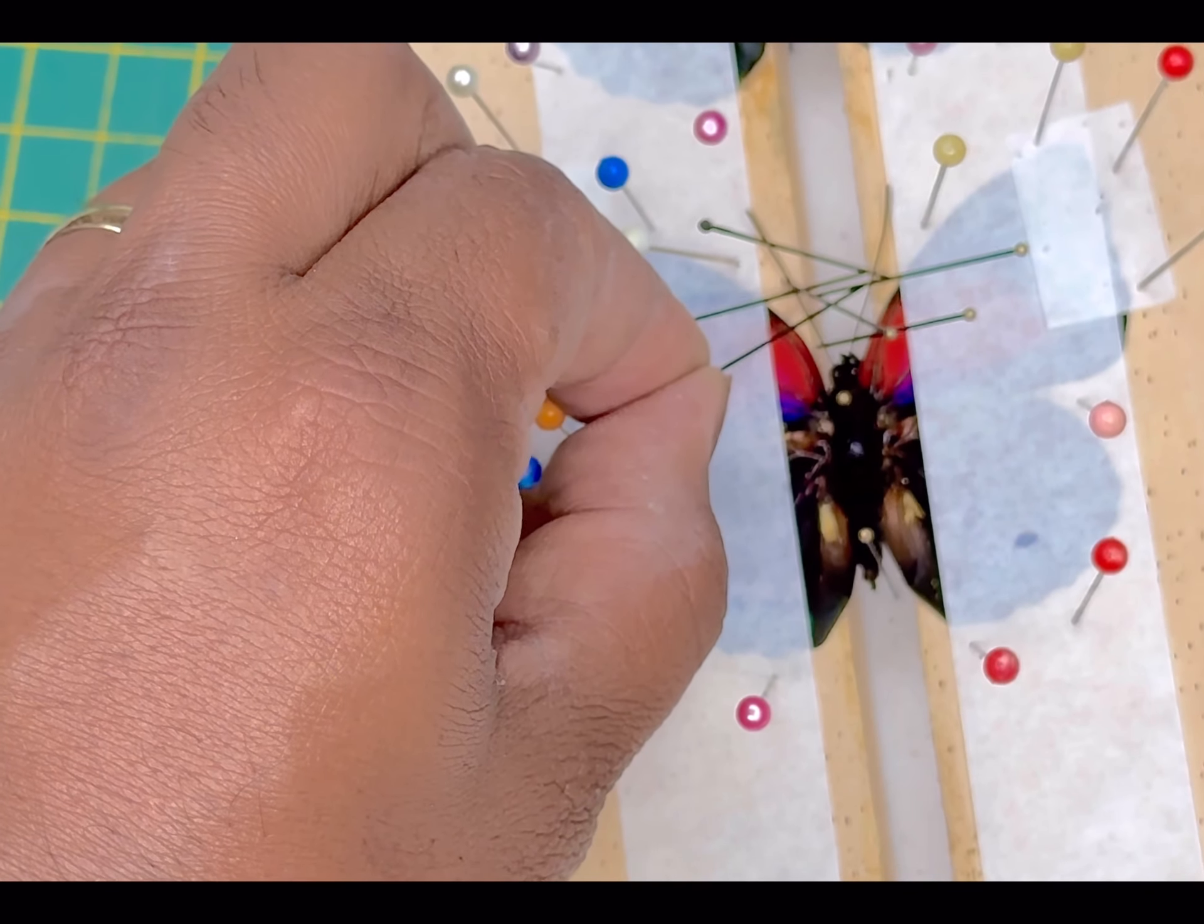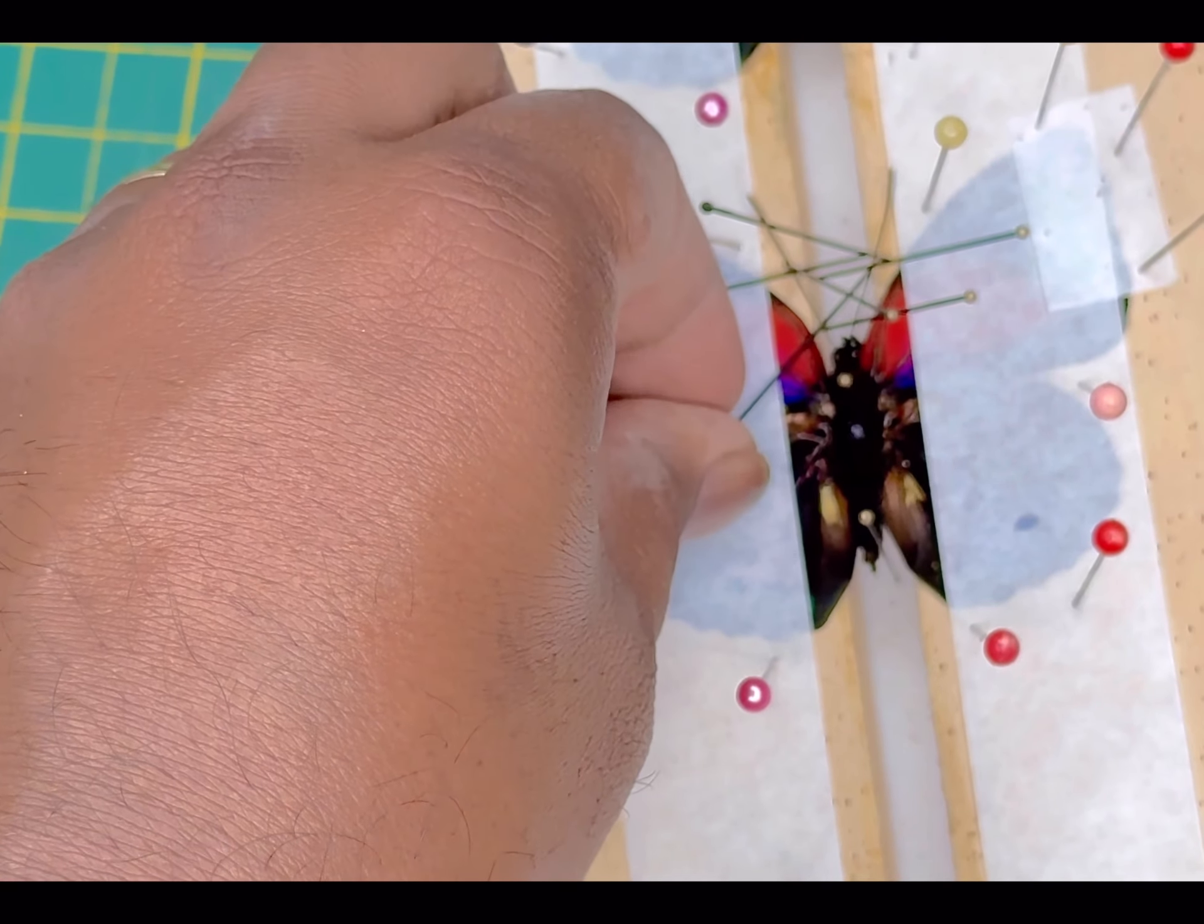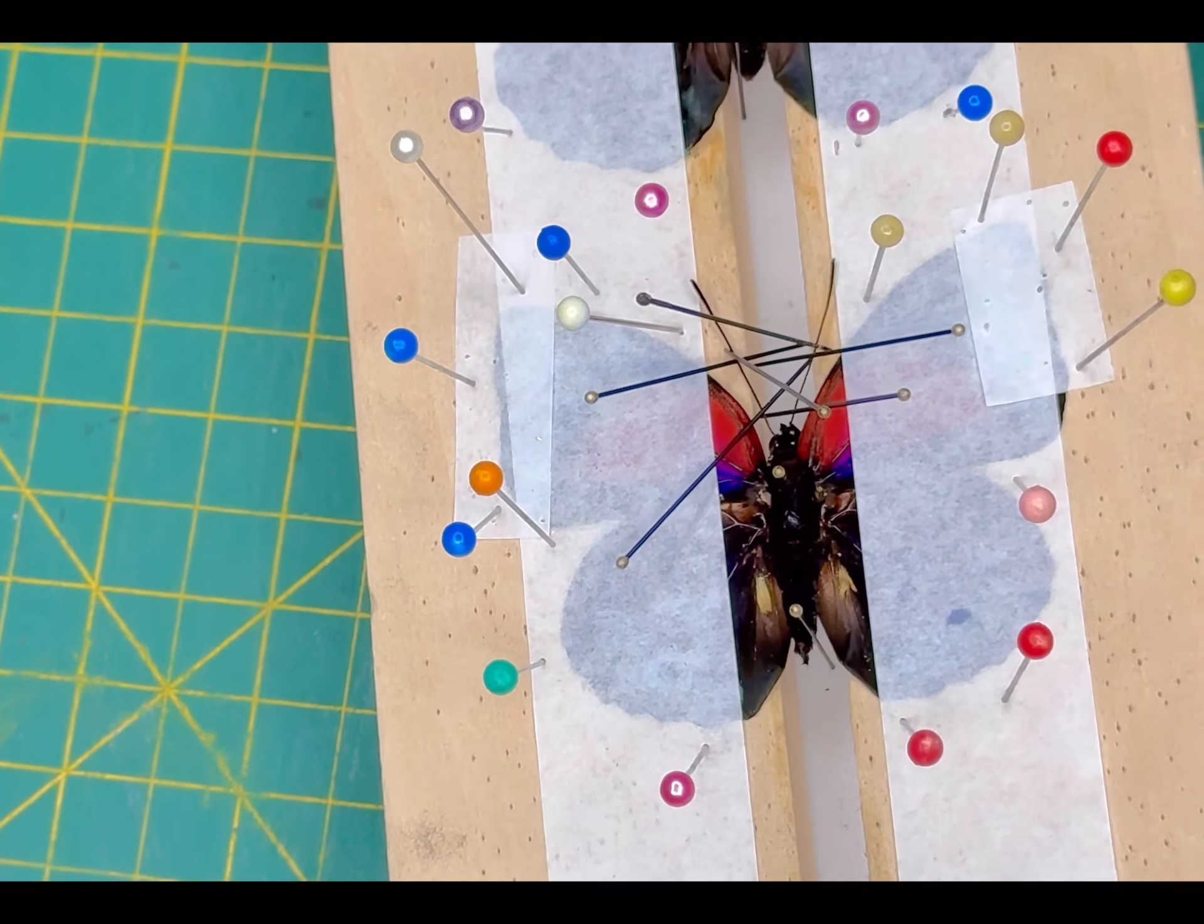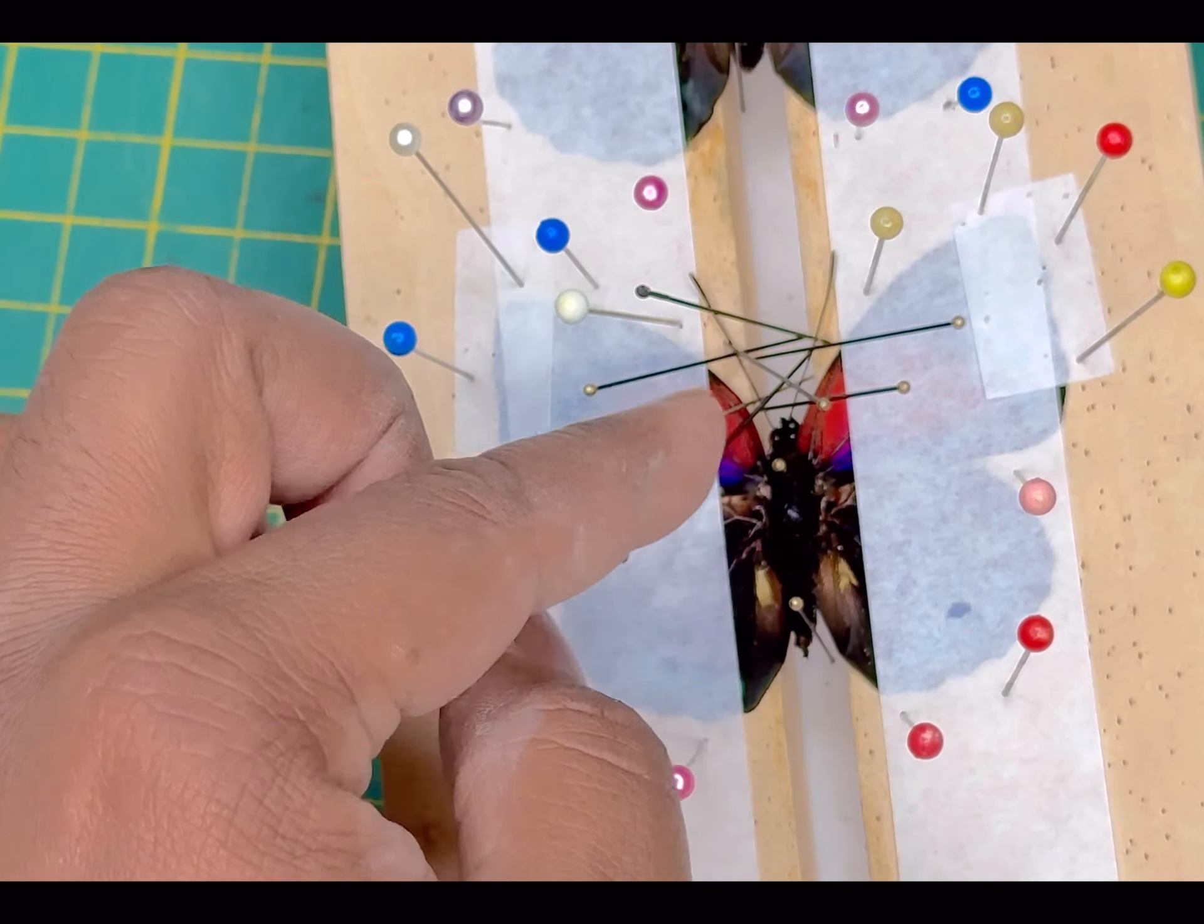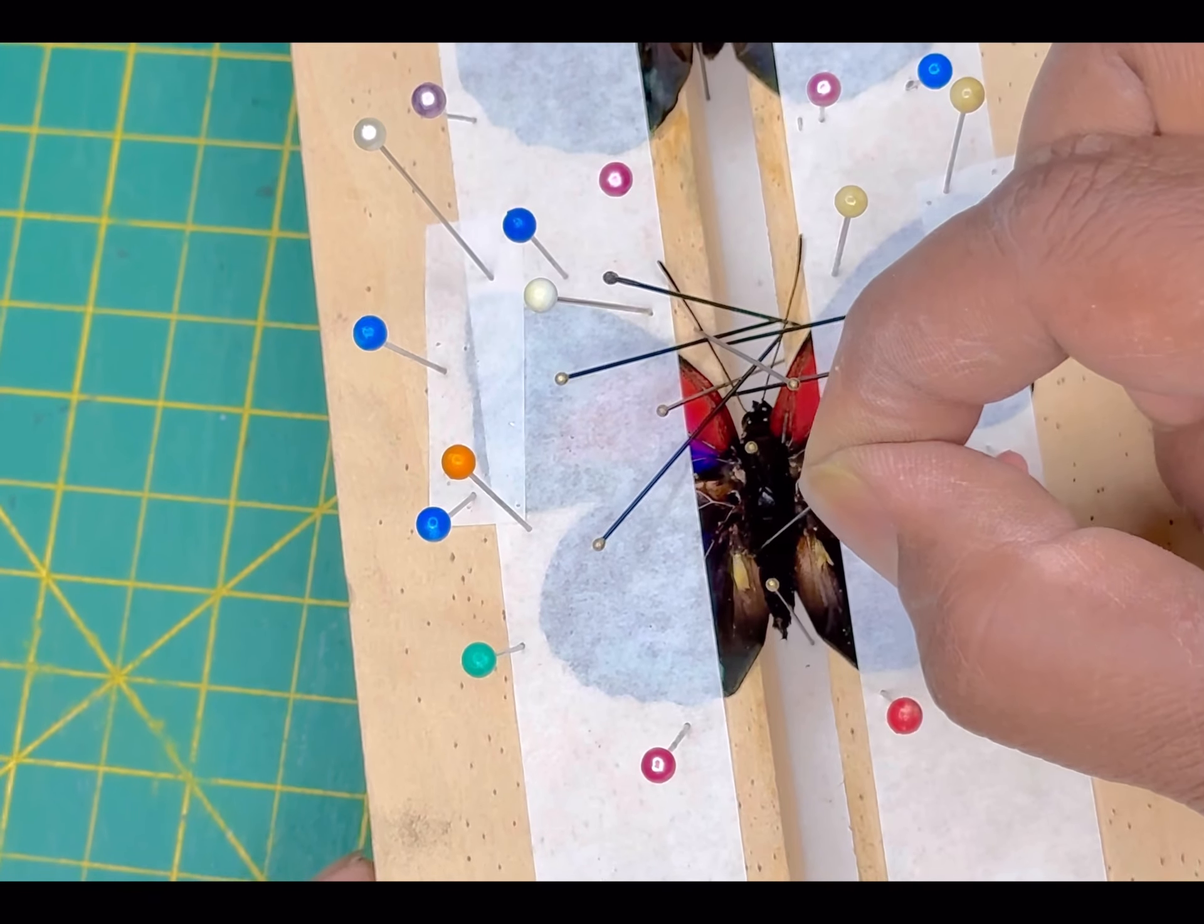And these are all fine finishing motions that are done at the very end once the specimen is fully symmetrical, and then I can make these minor adjustments. I will be able to let it dry overnight. Because I'm in such a dry environment, it will be ready for me to unpin in 24 hours.